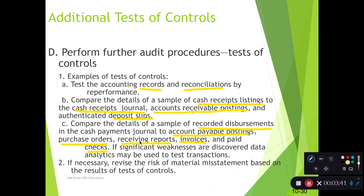This next piece kind of depends. If there are weaknesses discovered, data analytics can be used to test transactions. If there are IT weaknesses, we're not as comfortable with the data being generated. But the idea is that we can use analytics to find potential problems. Since this is after we've performed these audit procedures, the results could revise the risk of material misstatements.